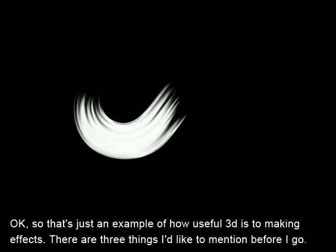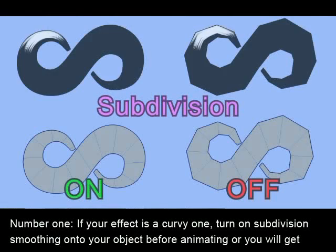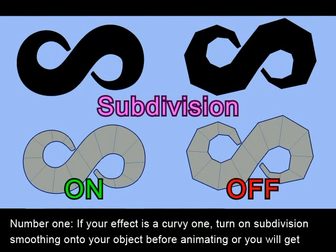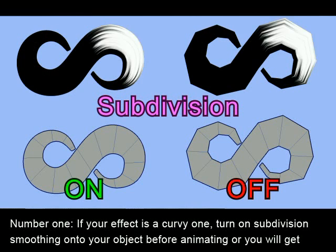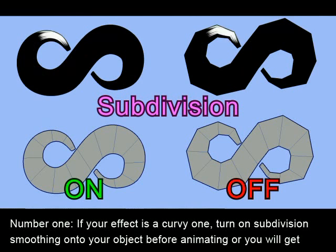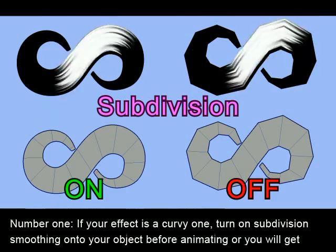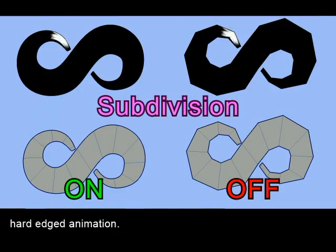Okay, so that's just an example of how useful 3D is to making effects. There are three things I'd like to mention before I go. Number 1: if your effect is a curvy one, turn on Subdivision Smoothing onto your object before animating, or you'll get hard-edged animation.